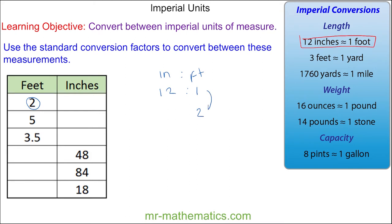To do this, we're going to multiply both sides of our ratio by two. Because 1 times 2 is 2, and 12 times 2 is 24. So 2 feet is 24 inches.